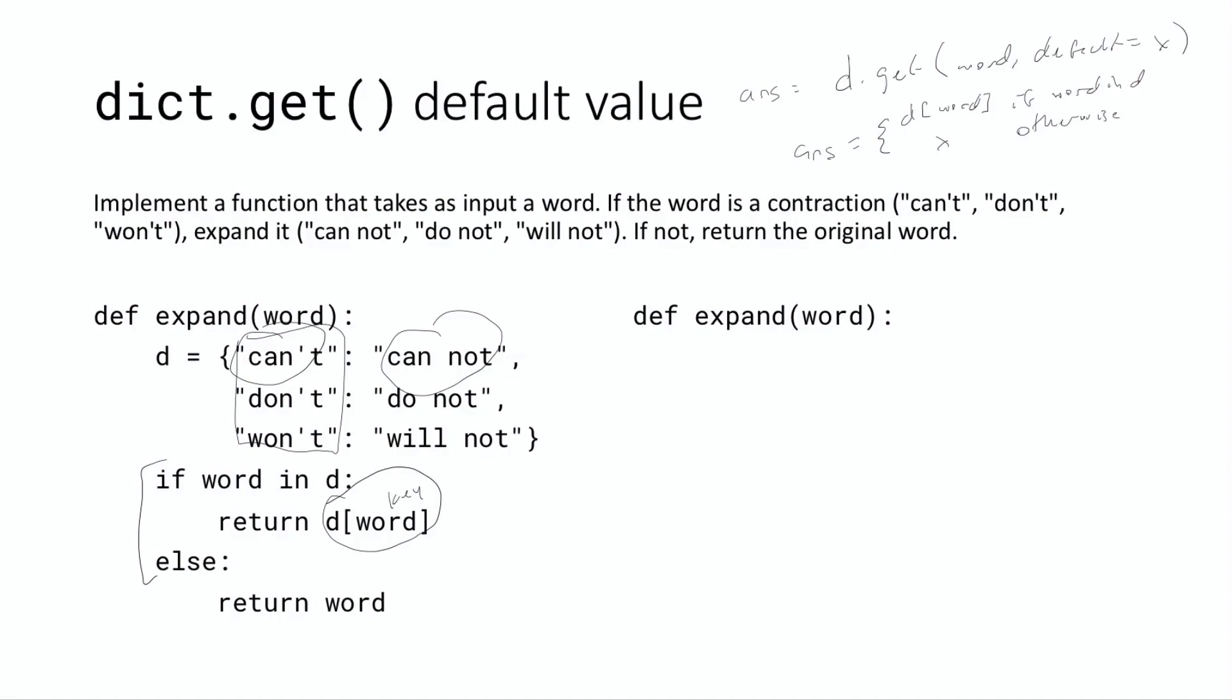Basically, we could do something like d.get(word), and the default value would just be the word. Because the idea is that if that word is in the dictionary is a key, you return the value, which is the expanded form of the contraction. But by default, we just want the original word itself back. And so our default value would just be the word itself.